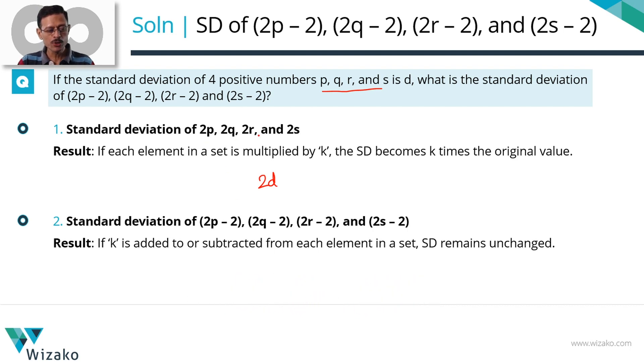So for 2P, 2Q, 2R, 2S, we found the standard deviation to be 2D. Therefore for 2P-2, 2Q-2, 2R-2, 2S-2, subtracting a 2 from each of these elements will have no change to what the standard deviation for this set was. Standard deviation for this set is 2D.